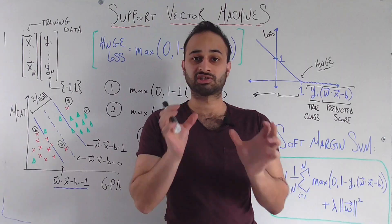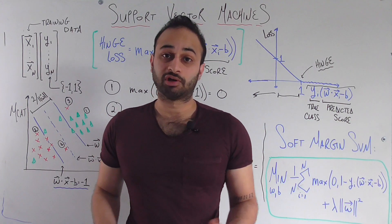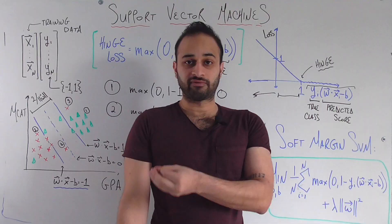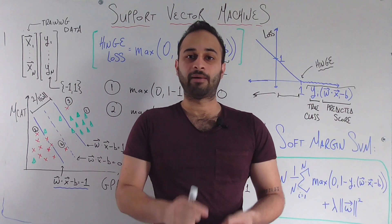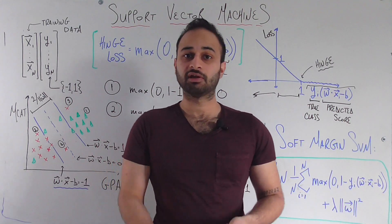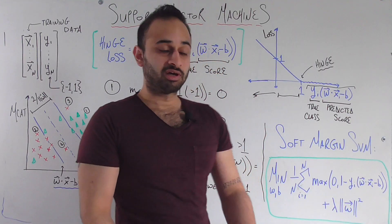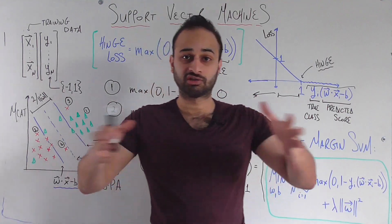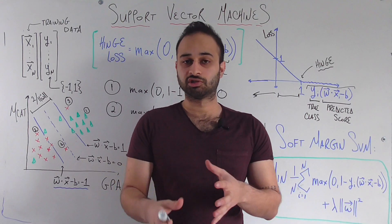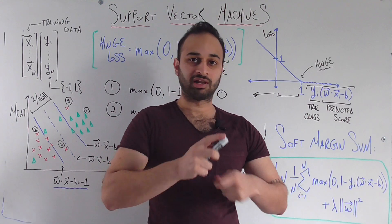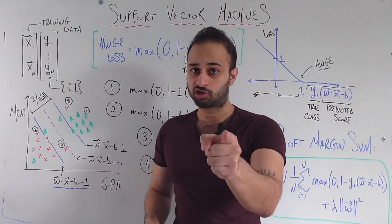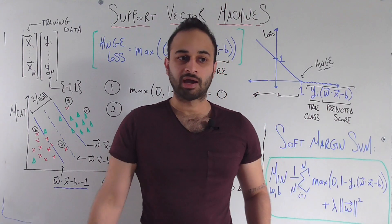The parameter lambda is a positive number that allows us to tune how much we care about each of these two goals relatively. Do we care a lot about maximizing the margin, or do we care more about minimizing misclassification errors? Lambda lets you choose that trade-off.